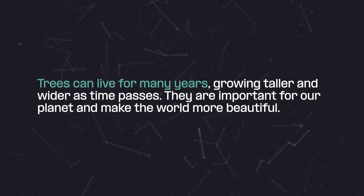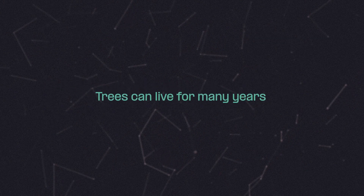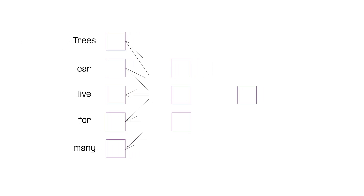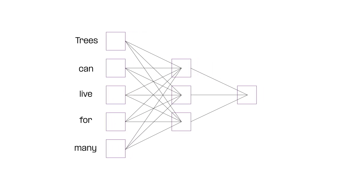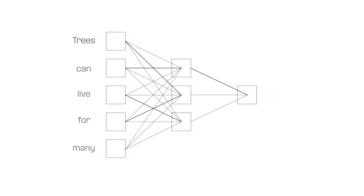In a nutshell, Continuous Bag of Words looks at a collection of words called the context window, where one of these words is missing. The missing word is called the target. The model then plays a game of fill-in-the-blank with itself, attempting to predict the target word based on the surrounding context. At first, the model isn't very good at guessing and makes a lot of mistakes. So, it phones a friend and asks it to tell it how close or far it was from the correct answer. This friend is called the loss function.